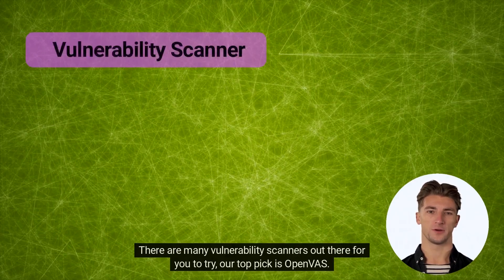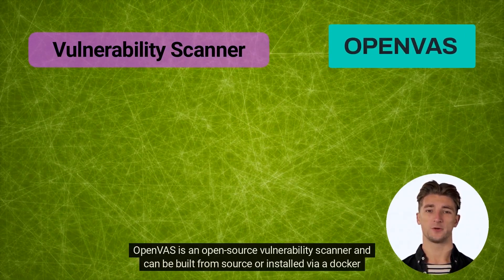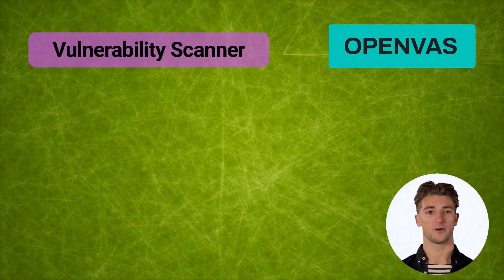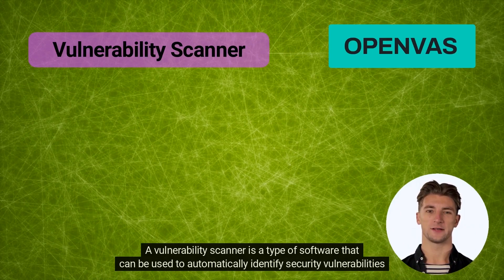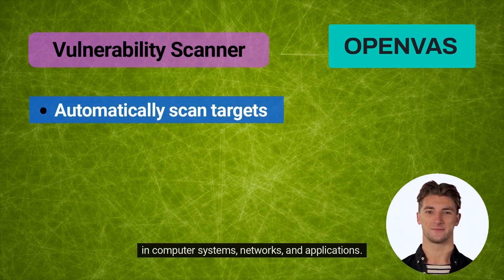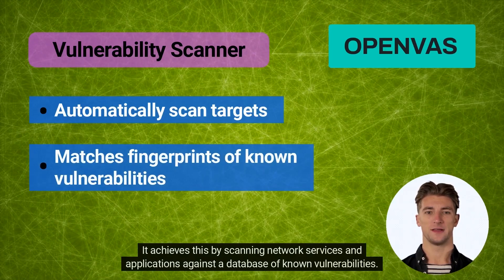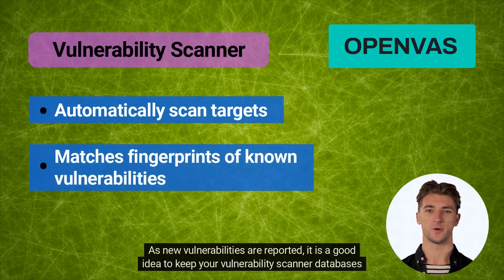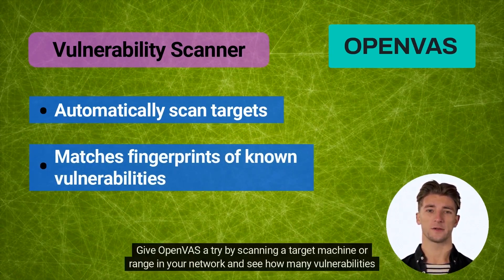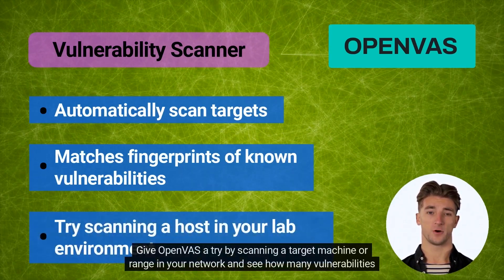There are many vulnerability scanners out there for you to try. Our top pick is OpenVAS. OpenVAS is an open source vulnerability scanner and can be built from source or installed via a Docker container. A vulnerability scanner is a type of software that can be used to automatically identify security vulnerabilities in computer systems, networks, and applications. It achieves this by scanning network services and applications against a database of known vulnerabilities. As new vulnerabilities are reported, it is a good idea to keep your vulnerability scanner databases up to date. Give OpenVAS a try by scanning a target machine or range in your network and see how many vulnerabilities it can identify.